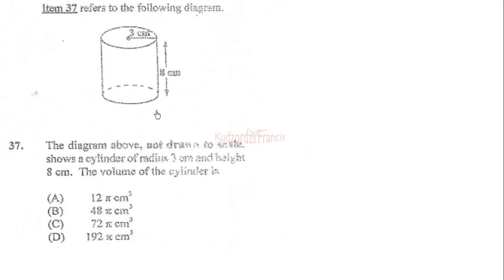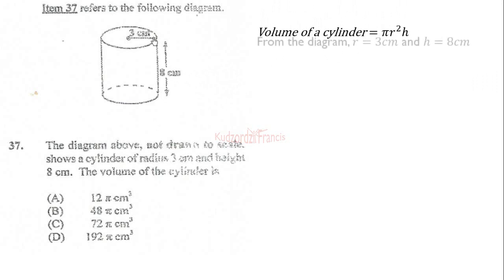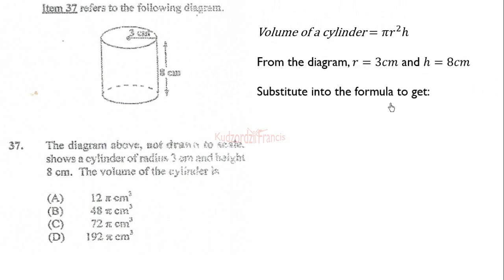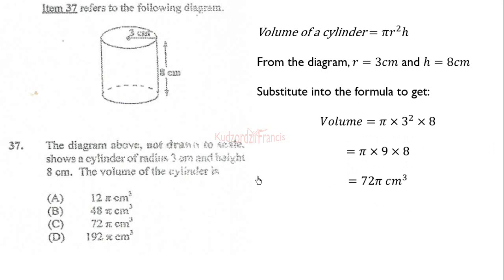Item 37 involves a cylinder and we are calculating the volume. The volume of a cylinder is given by pi r squared times h. The height is 8 and the radius is 3 centimeters. Substituting: pi times 3 squared times 8 — 3 squared is 9, times 8 gives 72 — so the volume is 72 pi centimeters cubed. The correct answer is C.